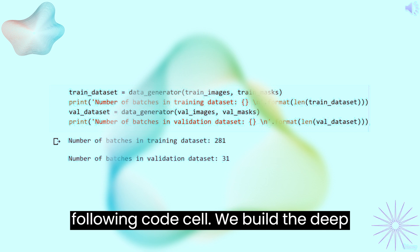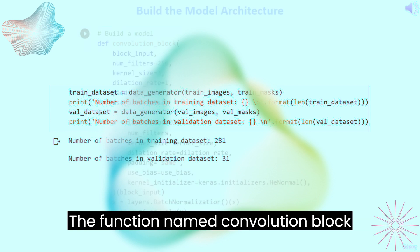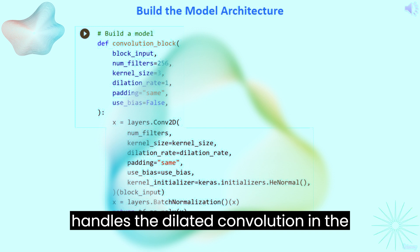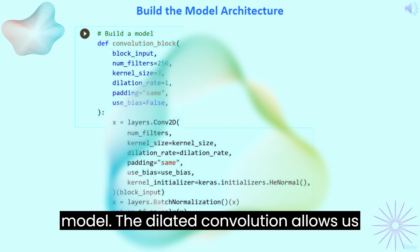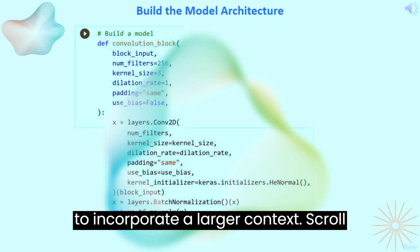Scroll down to the following code cell. We build the DeepLab model architecture in this code cell. The function named convolution_block handles the dilated convolution in the model. The dilated convolution allows us to enlarge the field of view of filters to incorporate a larger context.